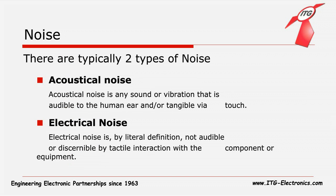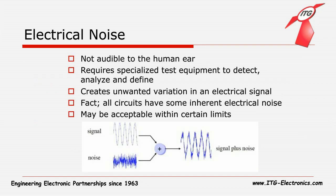Noise is an unwanted, loud, or confused sound, which is meaningless but disruptive to hearing. There are typically two different types of noise: acoustic noise and electrical noise. Acoustic noise is any unwanted sound or vibrations that is audible to the human ear and tangible to touch. The electrical noise is, by literal definitions, not particularly audible or discernible by tactile interference with the components or equipment. The noise itself requires special test equipment to detect, analyze, and define.